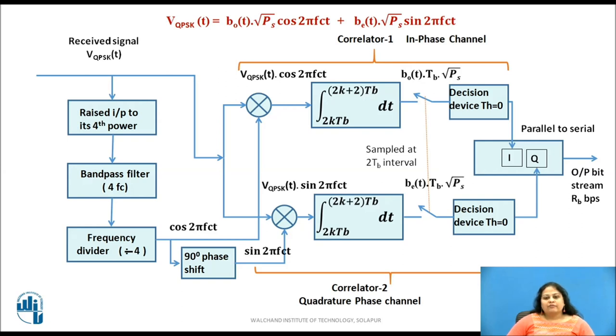With parallel to serial converter, the bits are then obtained as output bit stream with the data rate Rb bits per second. This is same as the data rate of the input bit stream which is used at the transmitter. In this way, synchronous or coherent detection method is used for QPSK signal demodulation.